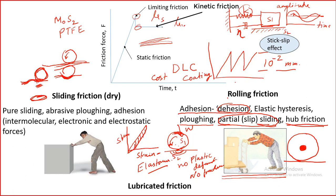Therefore rolling friction is not zero — it is much less compared to sliding friction, but it is not zero. These two are very important for us to understand what is sliding friction and what is rolling friction, because all the tribological solutions that we will discuss later are based on the concepts of friction, static friction, kinetic friction, and how we can reduce stick-slip behavior.